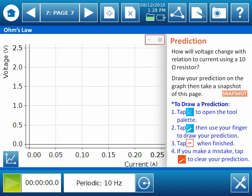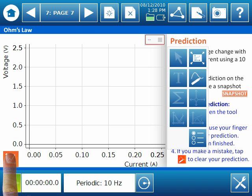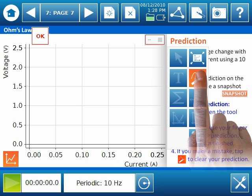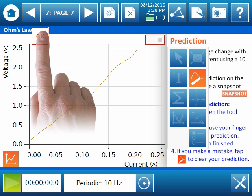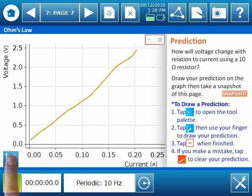So, following the instructions, I first select the Graph Tools Palette button to bring up the Graph Tools Palette. Then, I select the Prediction tool and draw my prediction right onto the graph. When I'm finished, I select OK. I see the snapshot icon on this page, so I'll go ahead and select the snapshot button to capture this page and add it to the journal.